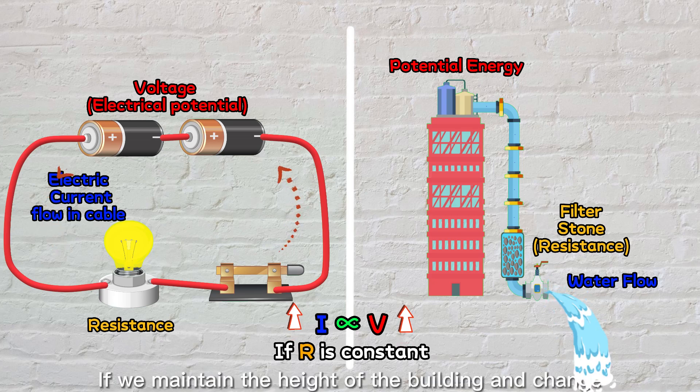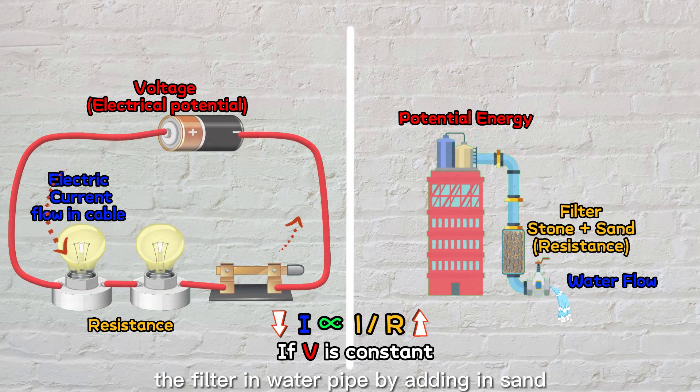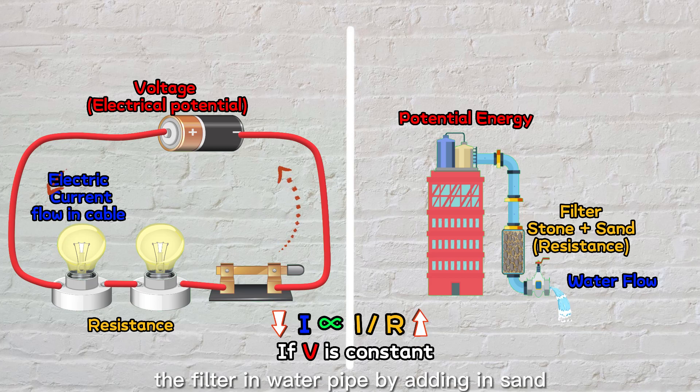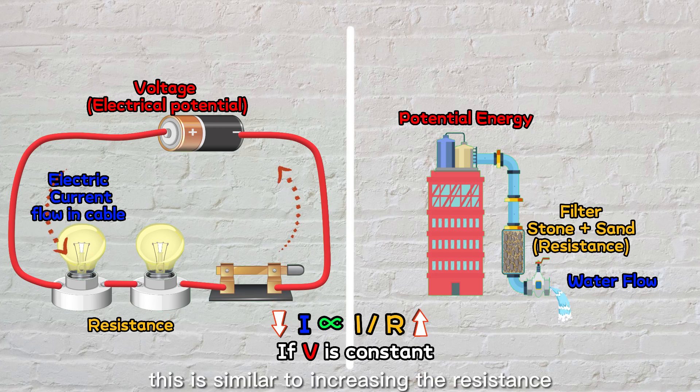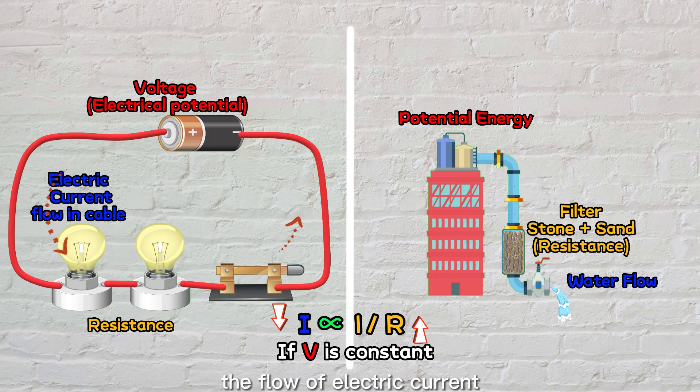If we maintain the height of the building and change the filter in the water pipe by adding sand, it will further reduce the flow rate of water. This is similar to increasing the resistance by adding more bulbs and the higher resistance reduces the flow of electric current.